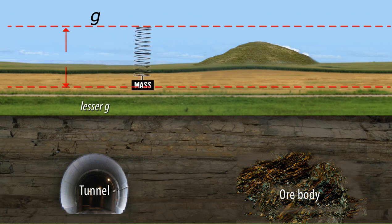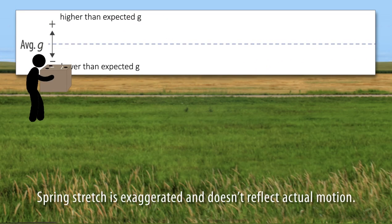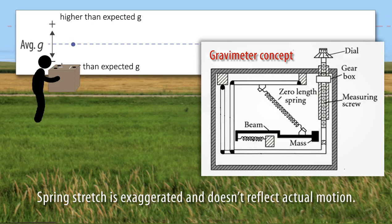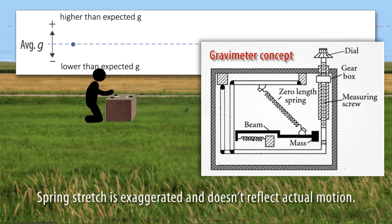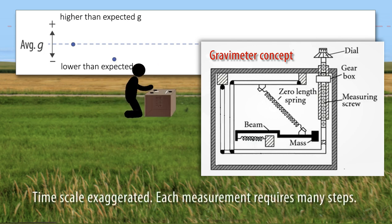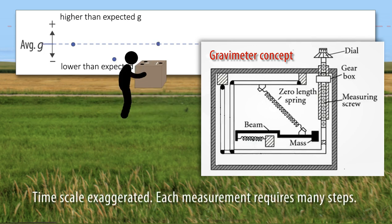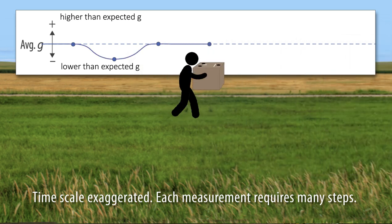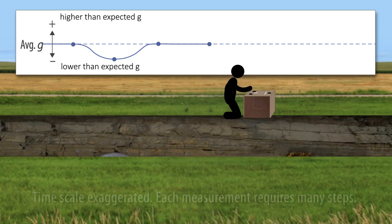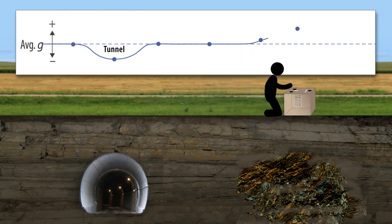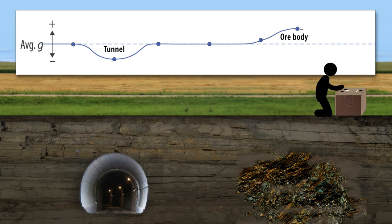Where the gravitational acceleration g is greater, it causes extra stretch in the spring. A gravity meter, or gravimeter, is an instrument that contains a highly sensitive spring. If you place it on the ground and let the spring settle, it can detect differences in gravitational acceleration smaller than one part in a million. As you move the gravity meter from place to place, it senses these tiny differences. The graph indicates lower than expected gravity as data points below the dashed zero line, and higher than expected data points above the line — showing low g above the tunnel and high g above the ore body, as expected.